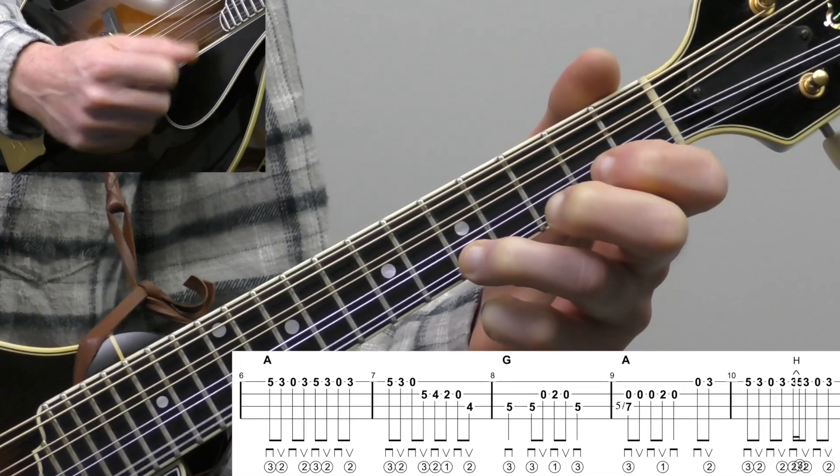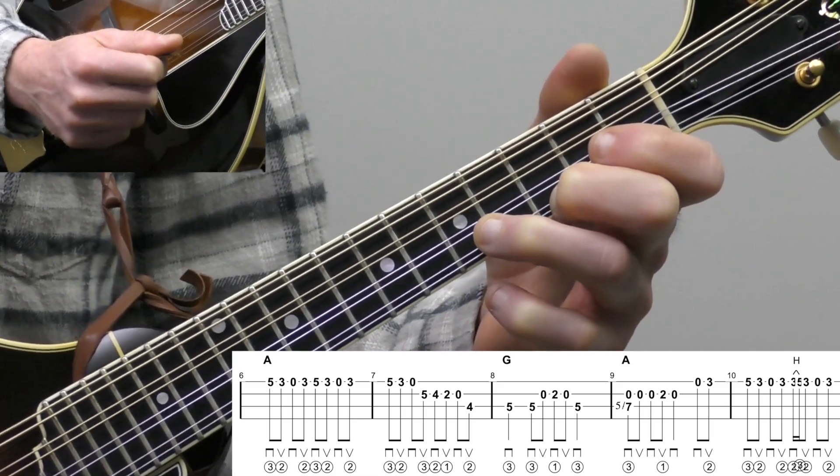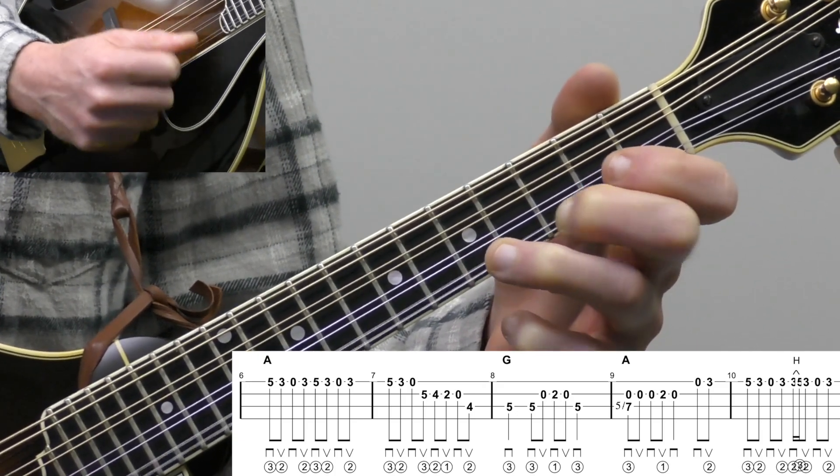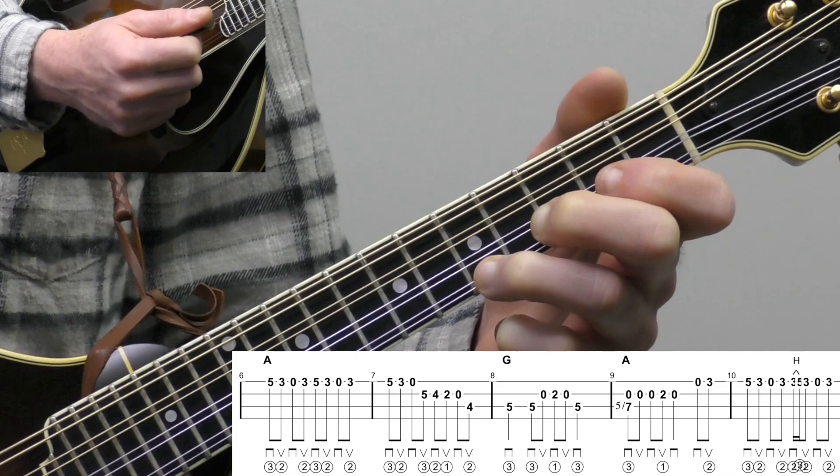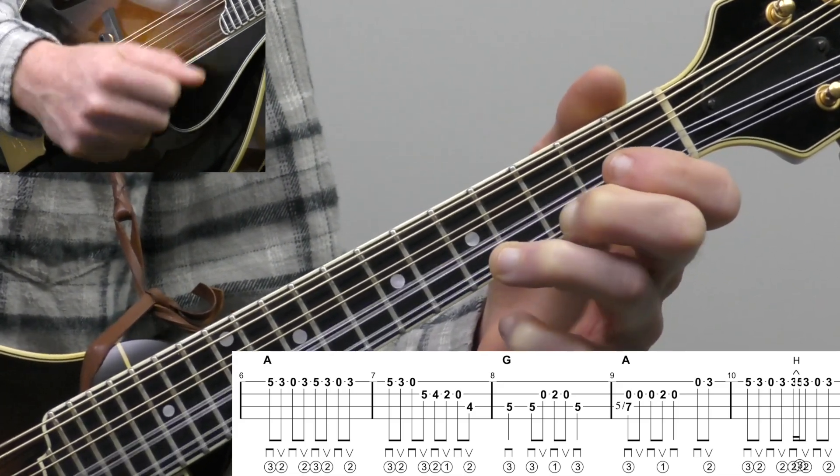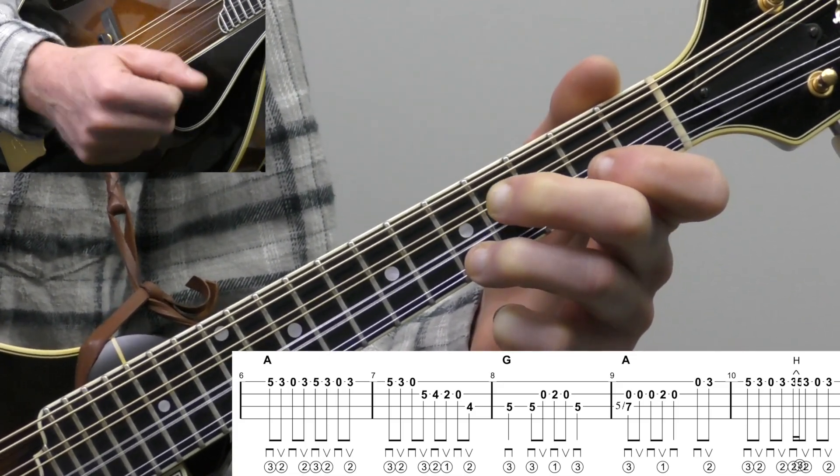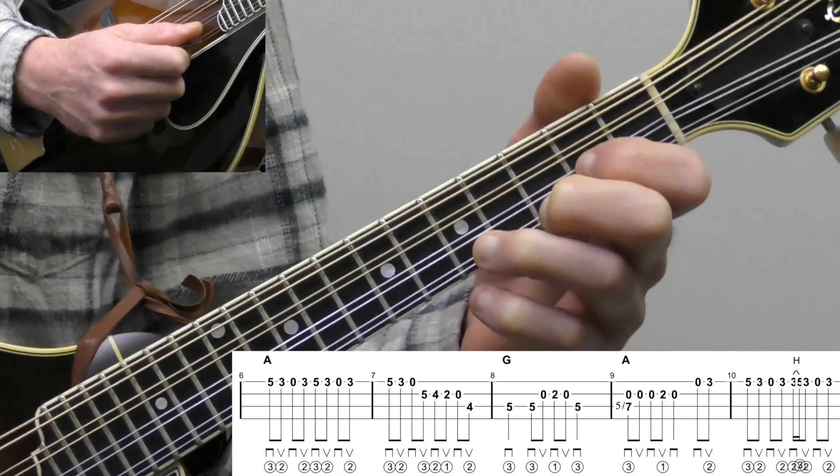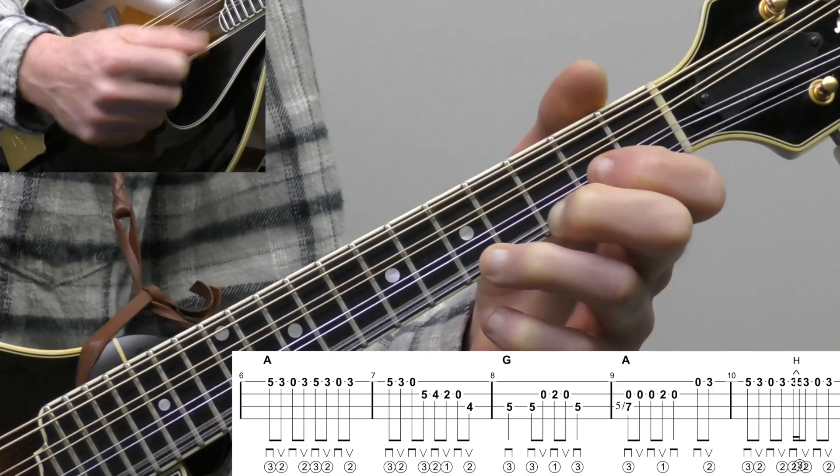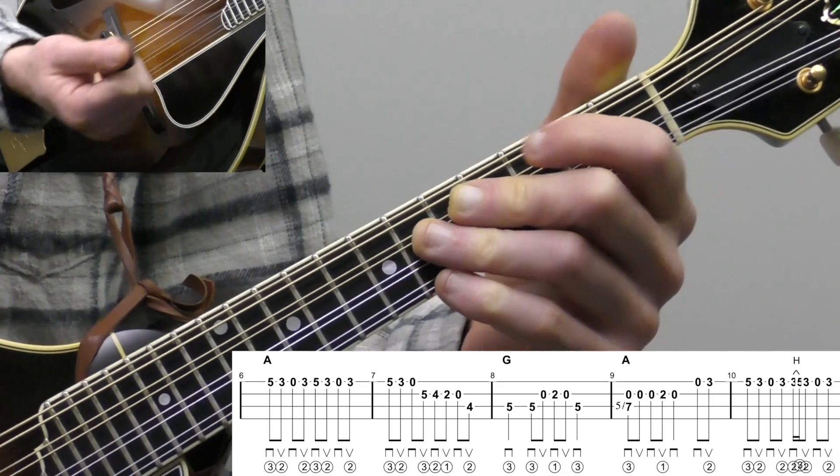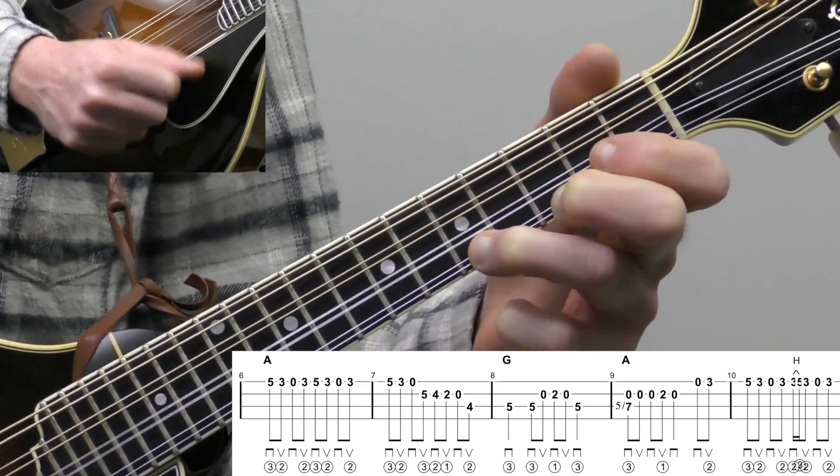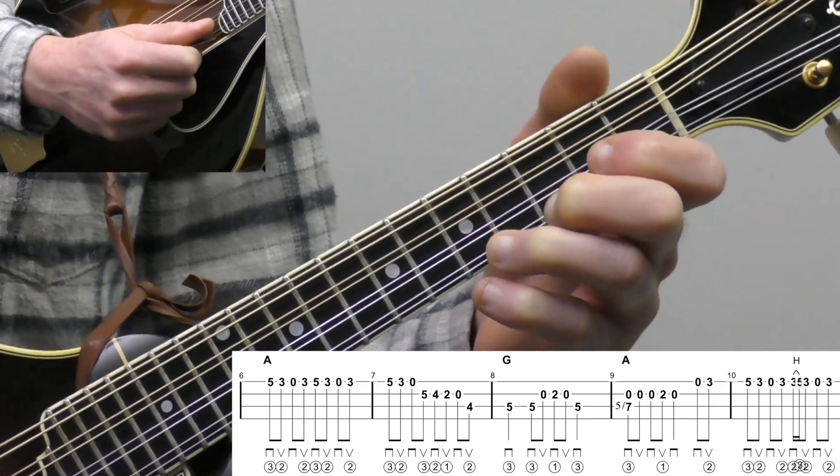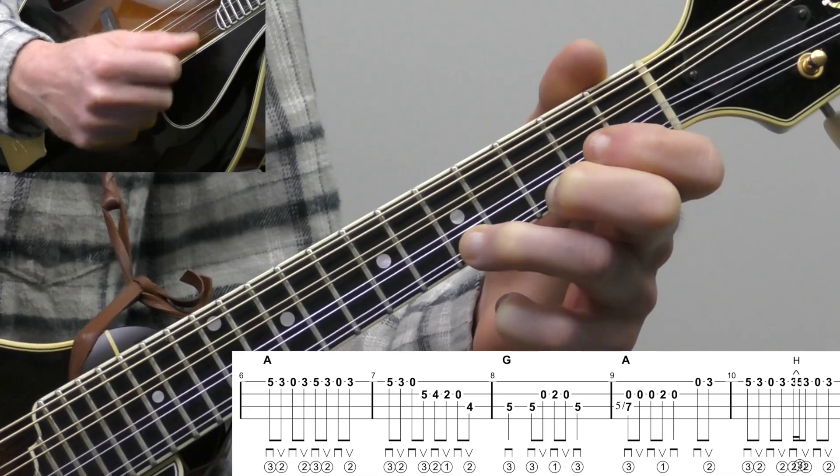There, if you can get that part down you actually have a good section of the A part down. Then we repeat that line that's the exact same as measure two: 5-3-open-3. The other thing you can do there that I might do occasionally is like drone with the A string. You can add that low kind of octave thing if you want. You wouldn't want to do it over the G chord but you can do it over the A, it sounds cool.